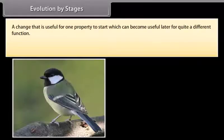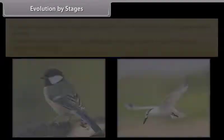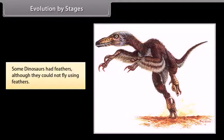Evolution by stages: A change that is useful for one property to start with can become useful later for quite a different function. Example: Feathers can start out as providing insulation in cold weather but later they might become useful for flight. Some dinosaurs had feathers although they could not fly using feathers.